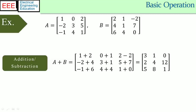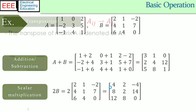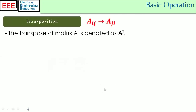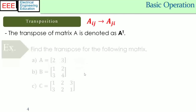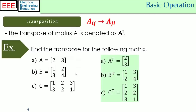The transposition involves the operation to flip the matrix over its diagonal. It swaps the row and column indices of the given matrix A and results in another matrix represented by A transpose. If A and its transpose are equal, matrix A is called symmetric.